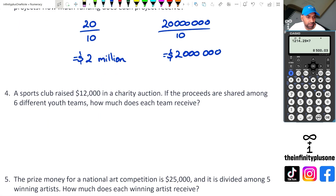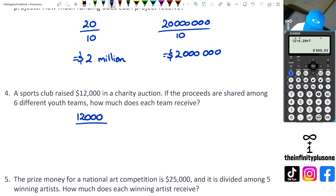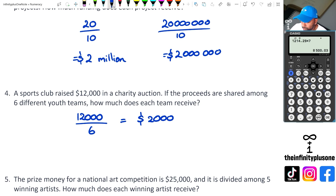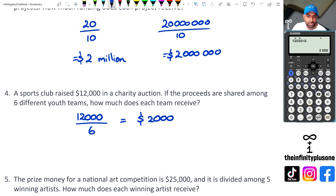Question four: a sports club raised $12,000 in a charity auction, shared among six different youth teams. How much does each team receive? Each team is going to receive $2,000. Nothing wrong with using a calculator if you're not sure — 12,000 divided by six gives $2,000.